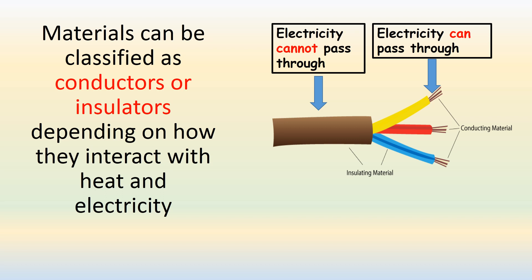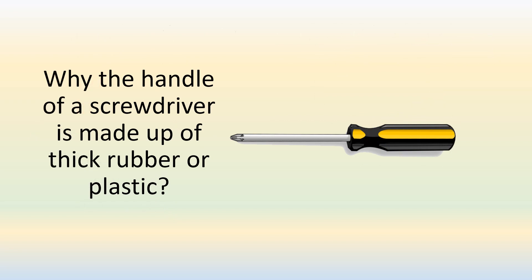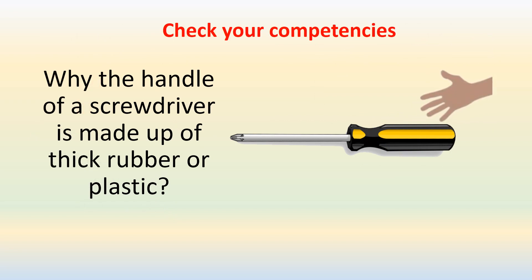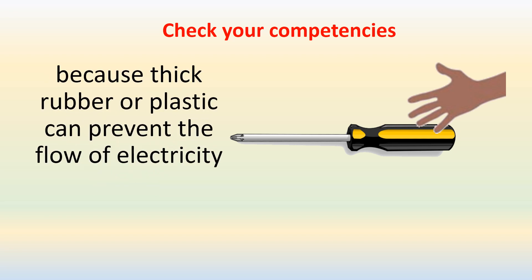Therefore, materials can be classified as conductors or insulators depending on how they interact with heat and electricity. Let's check your competencies: Why is the handle of a screwdriver made up of thick rubber or plastic? Because thick rubber or plastic can prevent the flow of electricity.